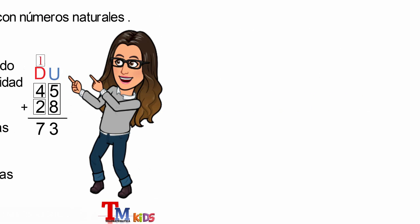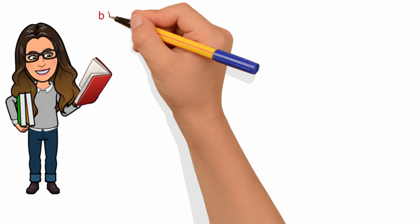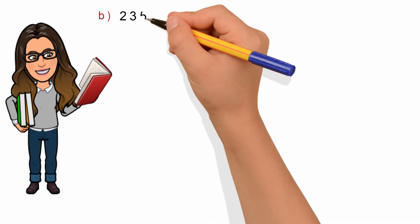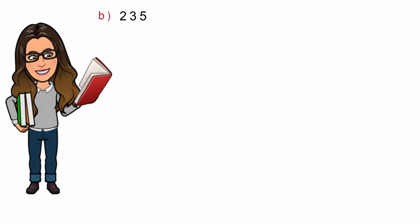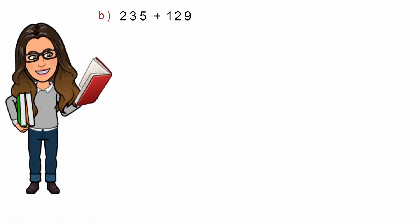A continuación, veremos cómo realizar este proceso para la suma con números de tres cifras. Literal B: 235 más 129.